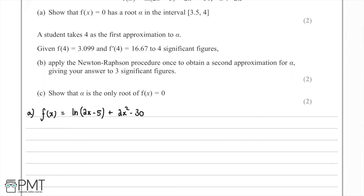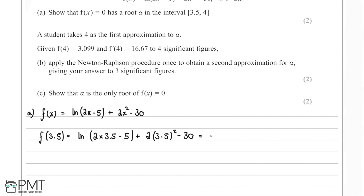We take f(3.5), the start point of our interval. We calculate ln(2 × 3.5 - 5) + 2 × 3.5² - 30, and putting this into the calculator it comes out at negative 4.81.